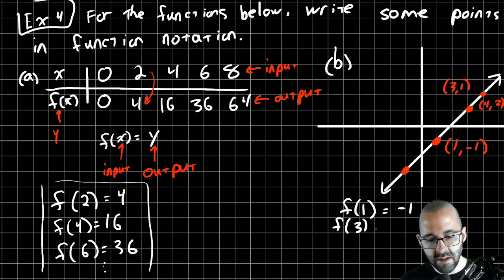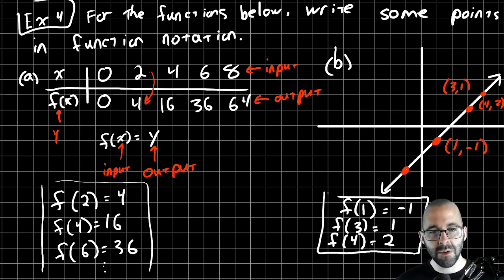f of the input 3 equals the output positive 1. f of the input 4, input inside, usually x, independent variable, equals the output 2. You can choose more points. There's infinitely many points on this line, but here are just a few.